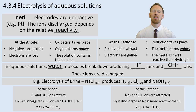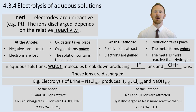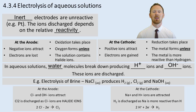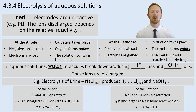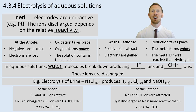At the cathode, sodium ions Na⁺ and H⁺ ions are attracted. Hydrogen is discharged because sodium ions are more reactive than hydrogen ions. The half equation is: two H⁺ ions gain two electrons — reduction is gain of electrons — and form H₂, a diatomic molecule of hydrogen.